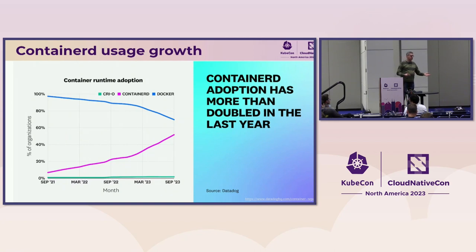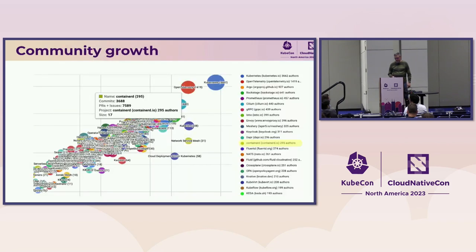Their highlight from their graph was that the adoption of ContainerD has doubled in the last year. Much of that is probably related to the Docker shim deprecation — a lot more people moving to ContainerD as a runtime for Kubernetes. But it's great to see that growth of usage that adds to what was already significant use. With every Docker installation, there was ContainerD as well, and other existing adopters.